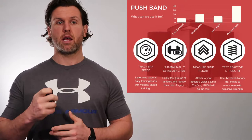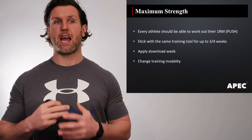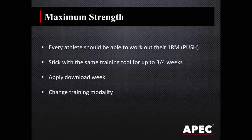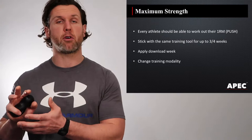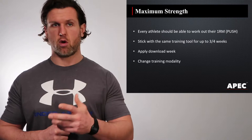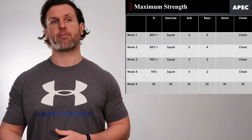When it comes to maximum strength, every athlete should be able to work out their 1RM — we can do this using a PUSH band. Stick with the same training tool for up to 3 to 4 weeks, then apply a download week. When we talk about a download week, we don't mean give the athletes a whole week off; we just mean change the stimulus slightly from strength-type training to maybe a higher repetition or hypertrophy-type quality. This is what a typical maximum strength program would look like.